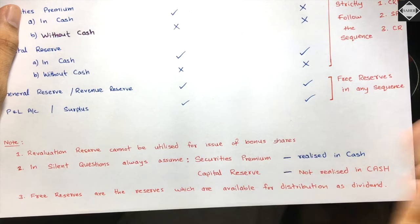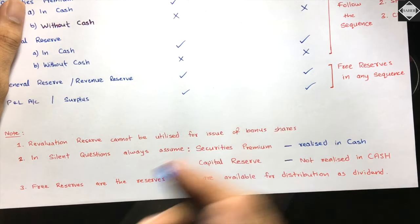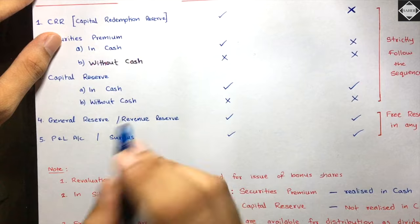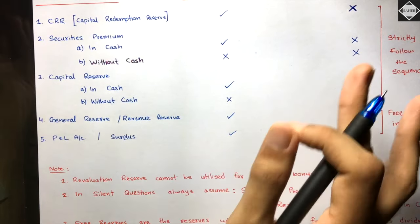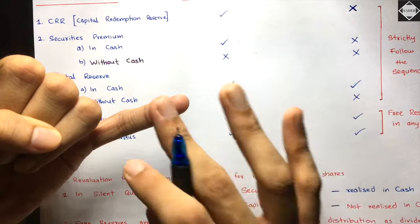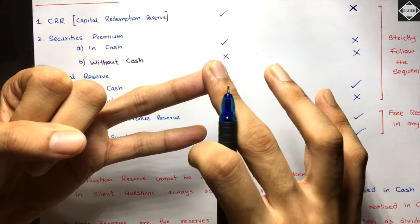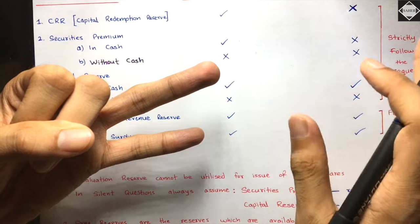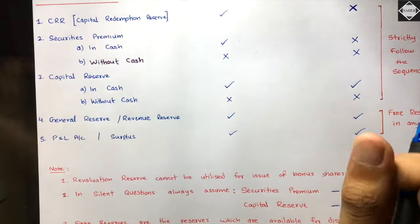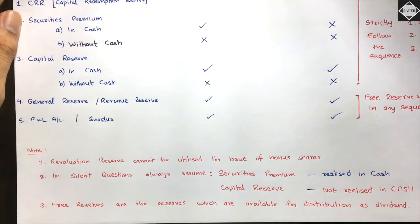Second note: in silent questions, always assume securities premium is realized in cash. For capital reserve, always assume it is not realized in cash when the question is silent. Third: in questions, the free reserves you'll mostly deal with are general reserve and profit and loss. Workman compensation reserve and investment fluctuation fund should not be used unless the question explicitly states they are free reserves.